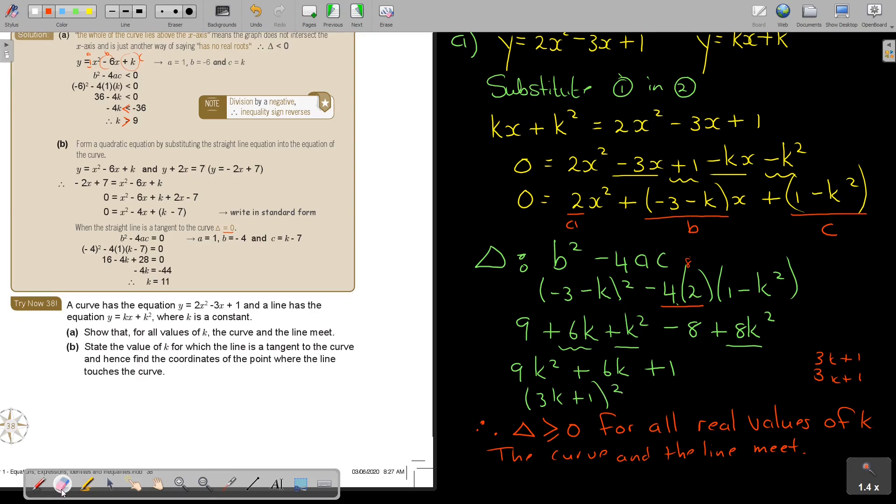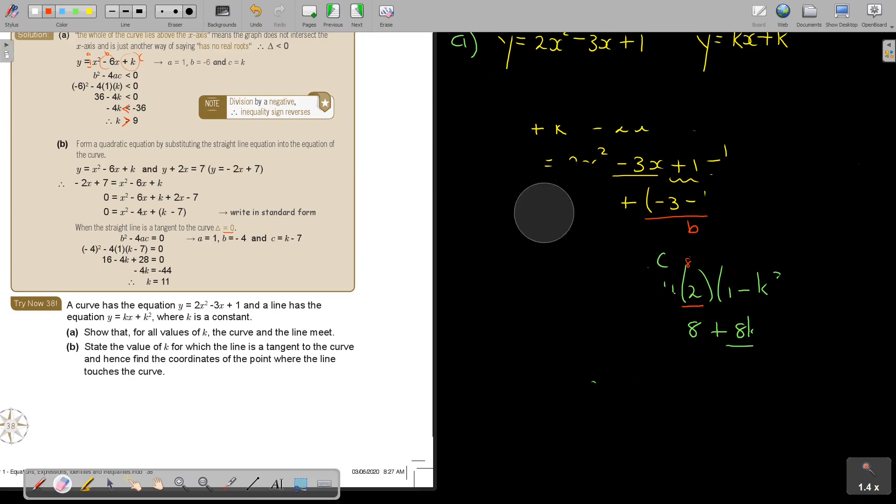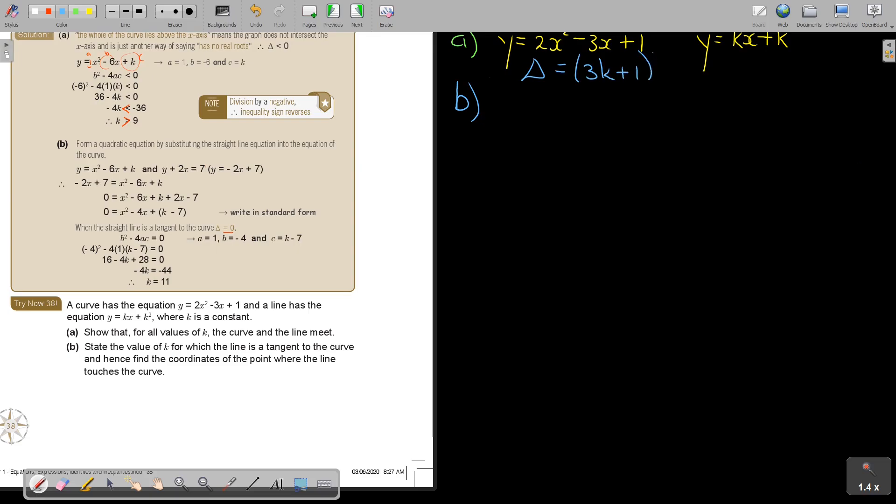Let's do number B. Let's just make space. I think up to here. State the value of K for which the line is tangent to the curve and hence find the coordinates of the point where the line touches the curve. Now, I think I just want to write here because I don't want to redo everything. So don't forget that the discriminant, I can make it another color. What was the discriminant? Can you remember? It was 3K plus 1 squared.